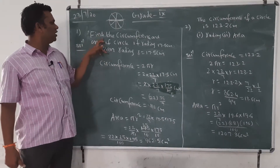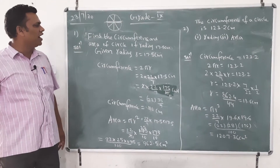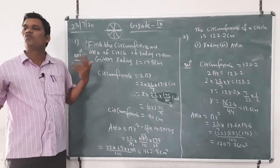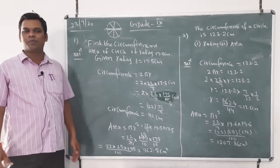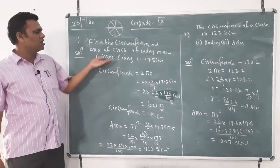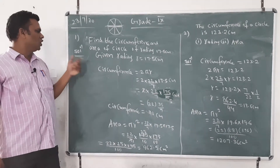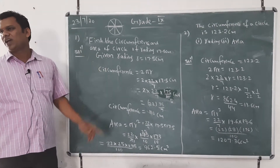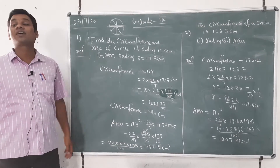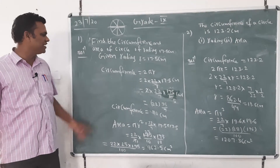Now, let's come to the problem. Find the circumference and area of a circle of radius 17.5 centimeters. For a circle, we use the term circumference rather than perimeter — for squares and rectangles we say perimeter, but for circles we say circumference. Given: radius r = 17.5 centimeters.